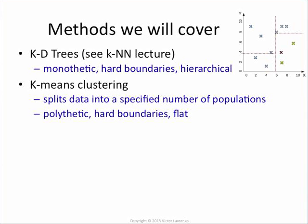The ones we'll cover from now on: we'll look at KMeans. It's a polythetic clustering method with hard boundaries. Basically, what it does is you have a population, you tell it how many clusters you want to find, and it will go and find them for you in a very suboptimal way, but it will.